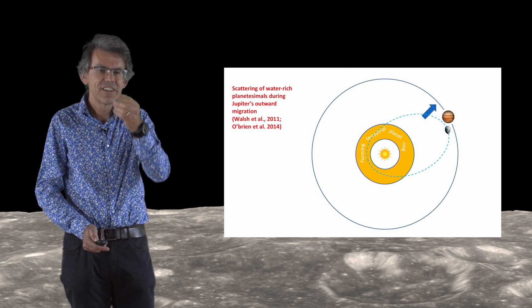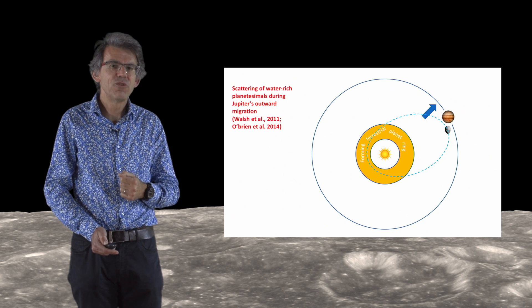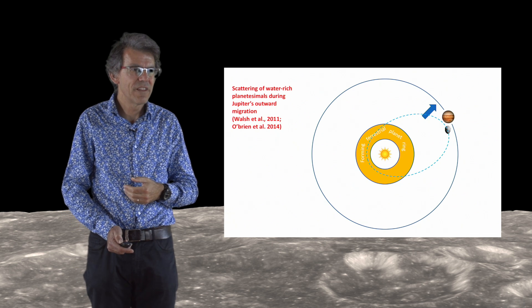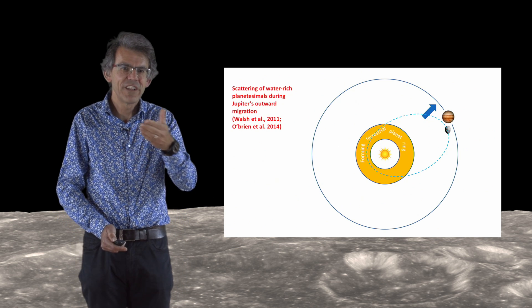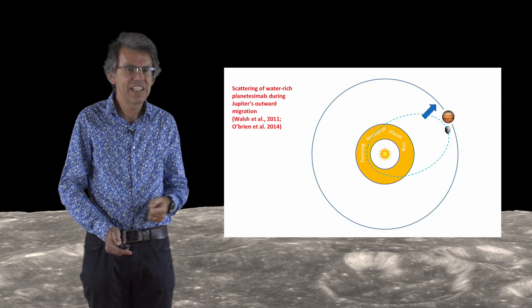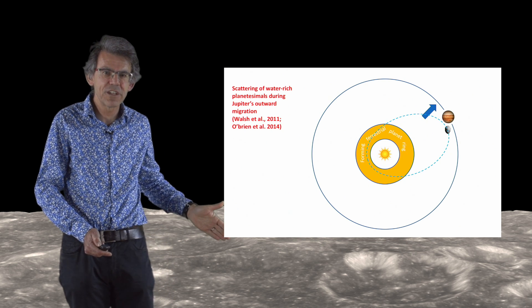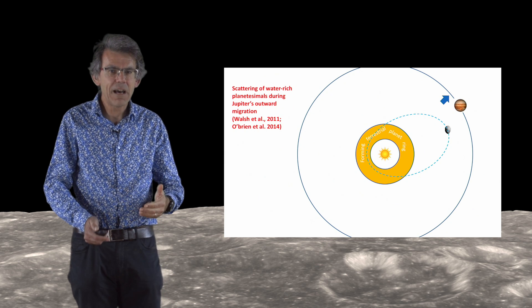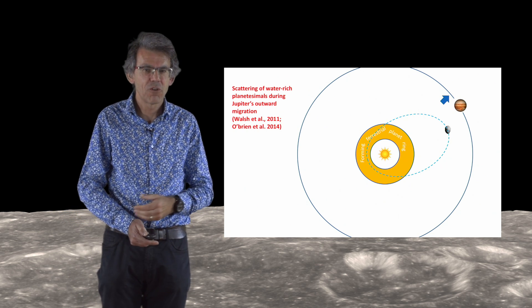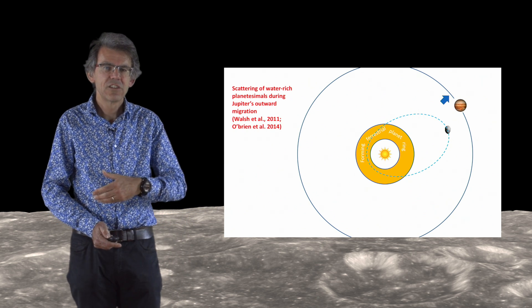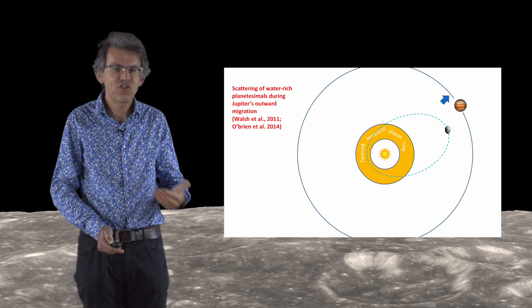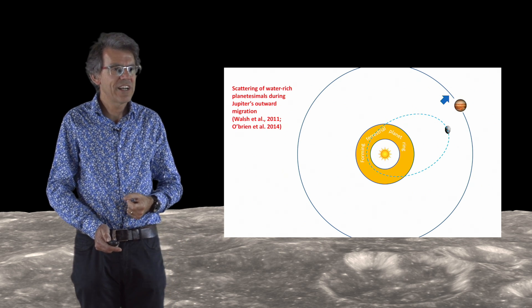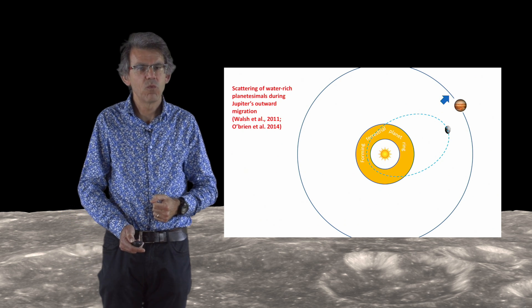Now these orbits, if they stayed in this configuration, would still cross the orbit of Jupiter. Then Jupiter would eject these planetesimals in a very short time before they have a chance to deliver their material to the growing terrestrial planets. But Jupiter continues its outward migration and this decouples the orbit of Jupiter from the orbit of these scattered planetesimals. So these planetesimals can live much longer and thus they have a chance to collide with the growing terrestrial planets and deliver their water.